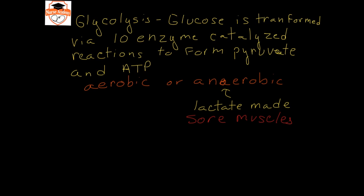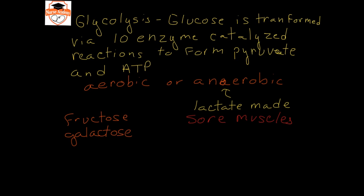Other monosaccharides besides glucose can function in glycolysis. Fructose, galactose, and many other monosaccharides can also be used in the glycolysis pathway because they will be converted to one of the intermediate compounds formed during the 10 enzymatic steps. These products slip in between the reactions and are also used to form pyruvate and ATP, or lactate and ATP in cells, depending on which intermediate stage they enter.